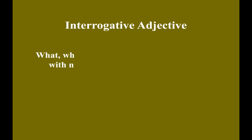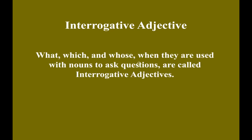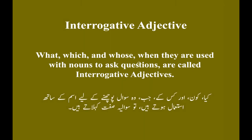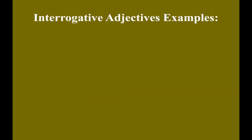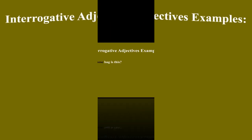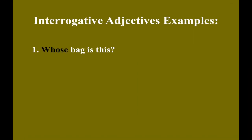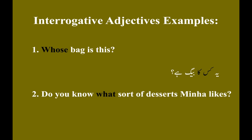Interrogative adjective. What, which, and whose, when they are used with nouns to ask questions, are called interrogative adjectives. Kya, kaun aur kiske, jab woh sawal puchnay ke liye ism ke saath istaymal hoti hain, toh sawal ya sift kehlate hain. Example number one: Whose bag is this? Ye kiska bag hai? Example number two: Do you know what sort of desserts Mina likes? Kya aap jaante hain ki Mina ko kis qisam ke meethe pasand hain?